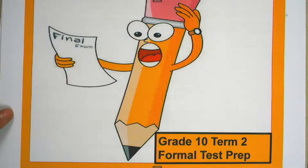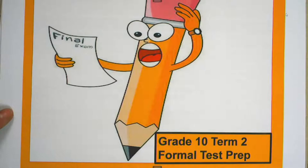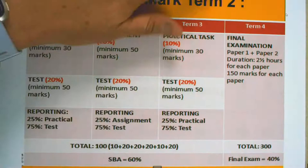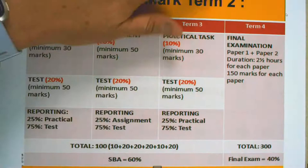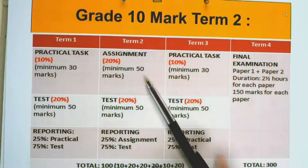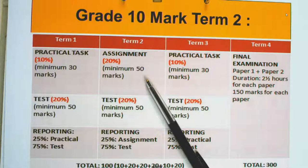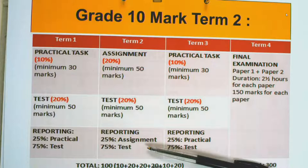We are starting with Grade 10 Term 2 formal test preparation. Before we look at the test content, I want to explain how it works in life sciences. Term 1 is finished. For Term 2, the assignment was 50 marks counting 20% towards your year mark. Today we look at the test, which also counts 50 marks and 20% towards your year mark. Your term mark is calculated as 25% from the assignment and 75% from this test.